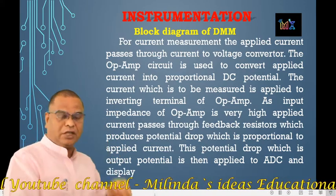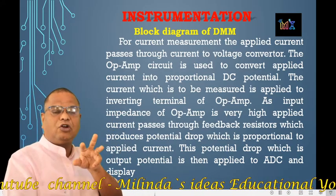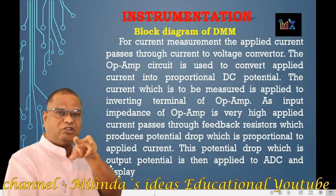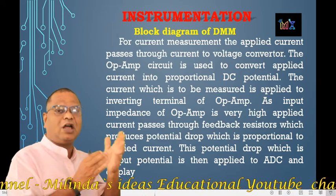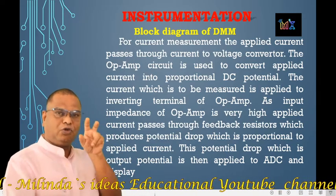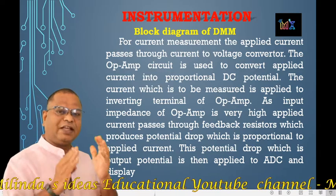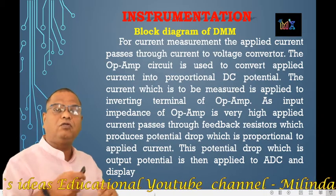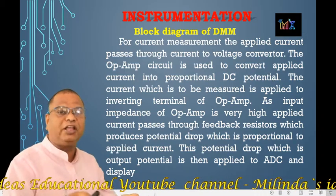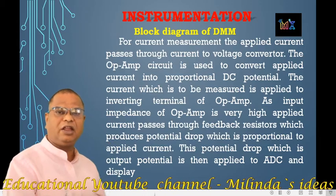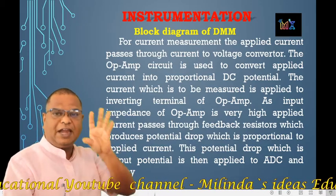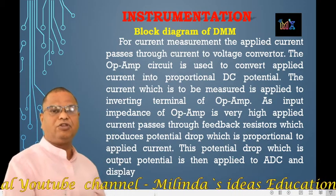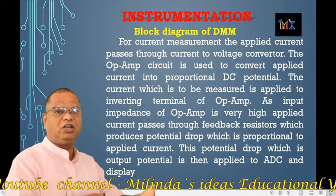That potential drop developed across the feedback resistor is the output potential, because the op-amp's feedback potential is considered as the output. So whichever resistor — R1, R2, or R3 — is connected to the circuit, the voltage across it is the output potential of the current-to-voltage converter. That output potential is then applied to the A to D converter. So the current-to-voltage converter converts the input current into a DC potential.